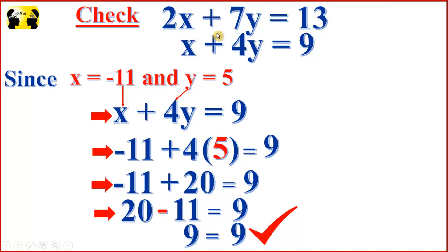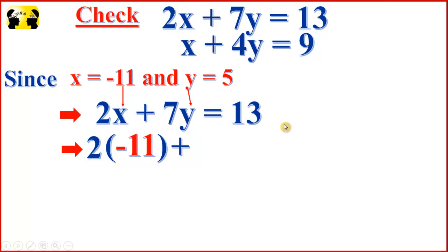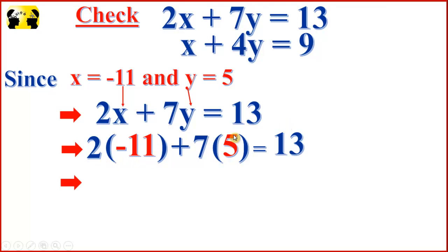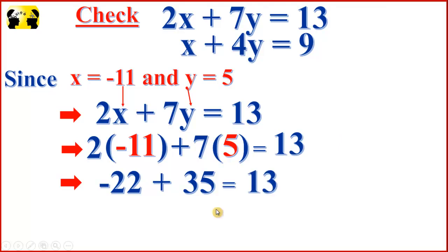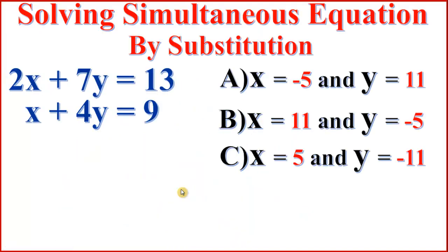Now we have to check the equation 2x plus 7y equal to 13. In place of x we substitute negative 11, and in place of y we substitute 5. That is 2 times negative 11, which is negative 22, plus 7 times 5, which is 35, equal to 13. Rearranging: positive 35 minus 22 equal to 13, which is 35 minus 22 equals 13. The values of x and y are correct.